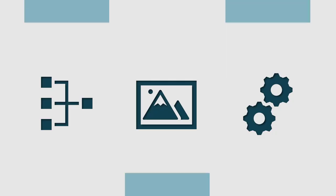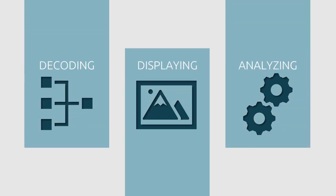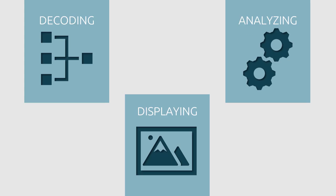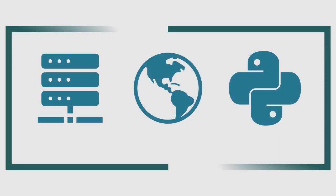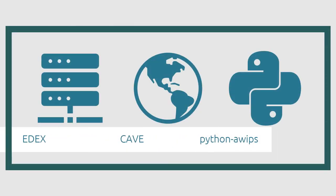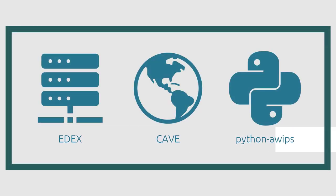AWIPS is a software package used for decoding, displaying, and analyzing meteorological data, made possible by its three main components: the EDX, CAVE, and Python AWIPS.